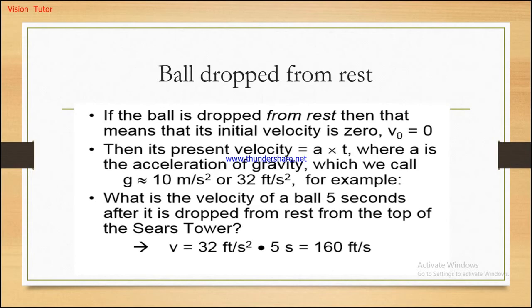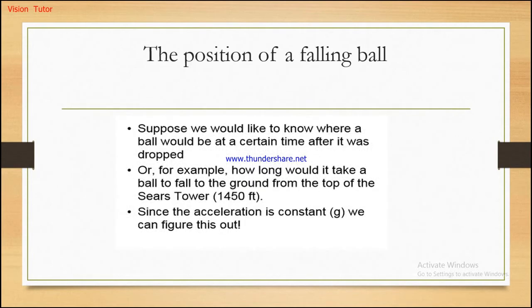So, ball dropped from rest. If the ball is dropped from rest, the initial velocity is zero. Then its velocity becomes acceleration times time: v = at. Acceleration is constant — the acceleration of gravity, which is 10 m/s² or 32 ft/s². So v = g × t. After five seconds, velocity becomes 32 × 5 = 160 ft/s.